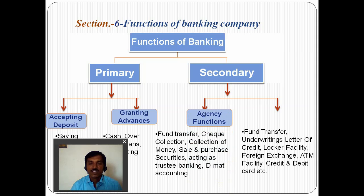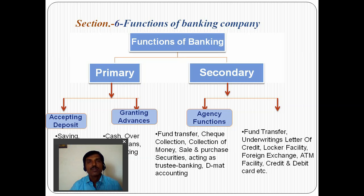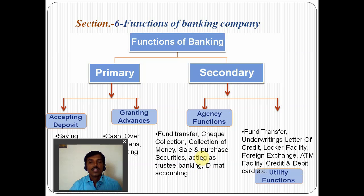The secondary functions include agency functions. Fund transfer methods like RTGS and NEFT are used by the bank. The bank also collects cheques on behalf of their customers, and works as an agent of their customers — paying telephone bills, LIC payments, and other payments. The bank also does sales and purchase of securities as a trustee, and people trust the bank, so they deposit their money in safe deposit lockers.